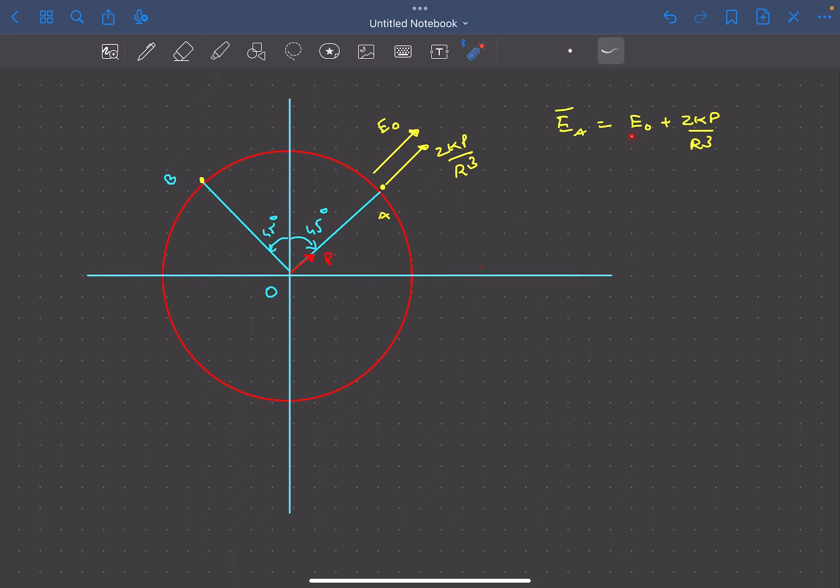So the electric field at A is simply going to be E₀ + 2kp/R³, and its direction will be in the OA direction, that is (î + ĵ)/√2.